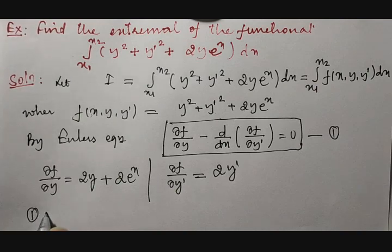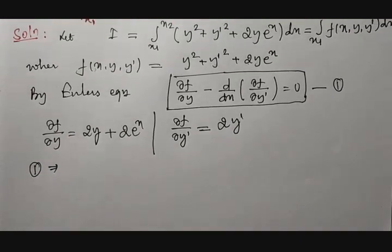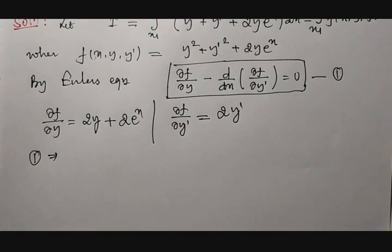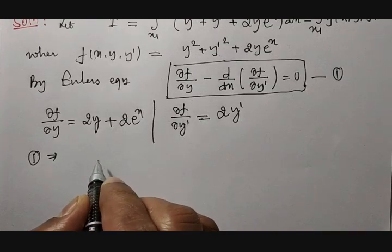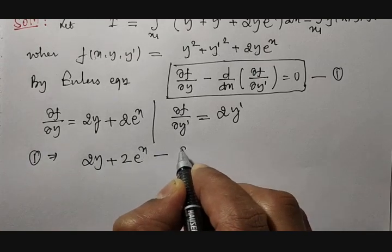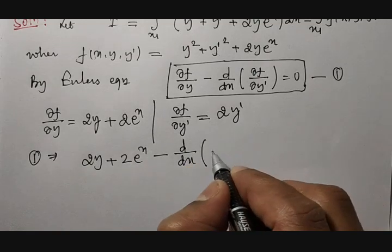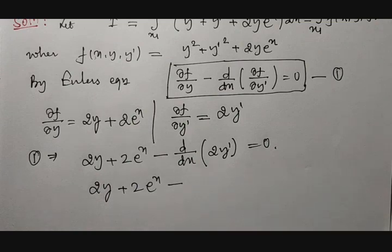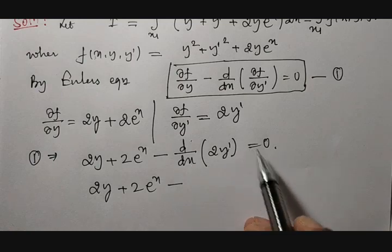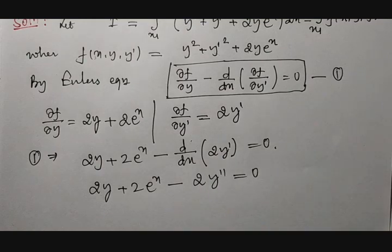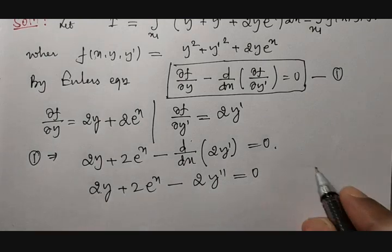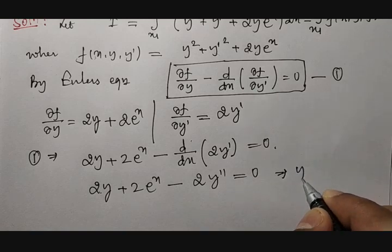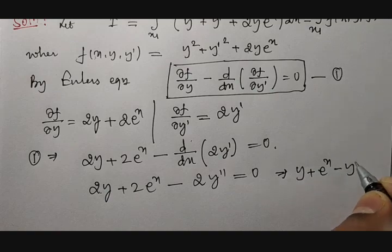Substituting into Euler's equation, equation number one becomes: 2y plus 2 times e raised to x, minus d/dx of 2y-dash, equals zero. Since d/dx of 2y-dash means differentiating y-dash with respect to x once again, it becomes 2y-double-dash. Therefore: 2y plus 2e^x minus 2y-double-dash equals zero. Dividing through by 2 gives: y plus e raised to x minus y-double-dash equals zero.